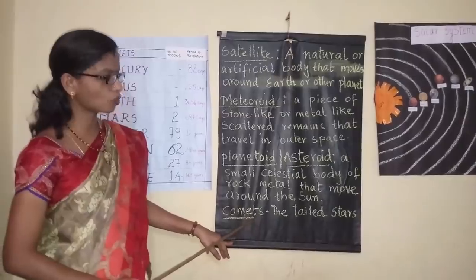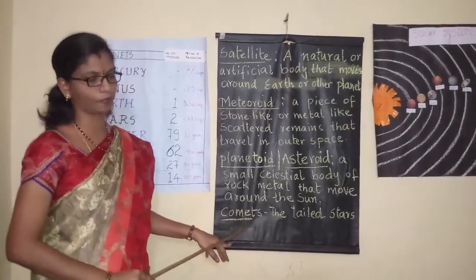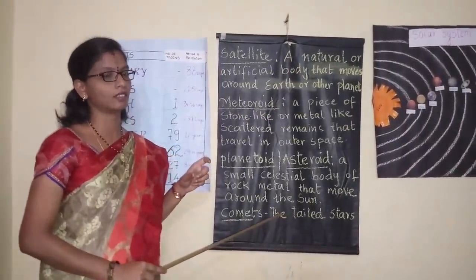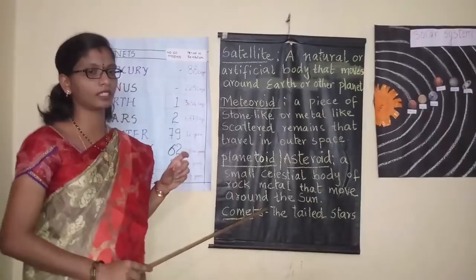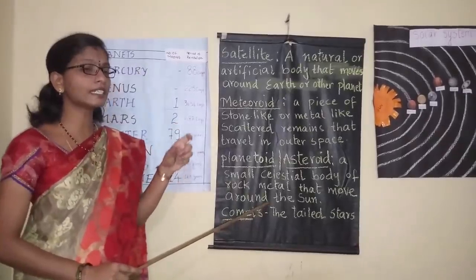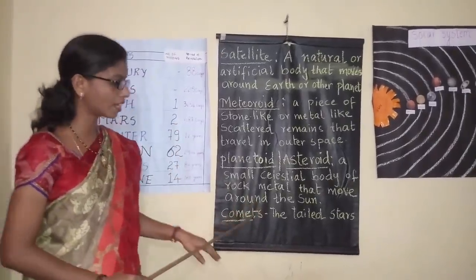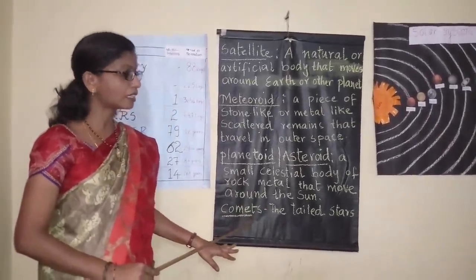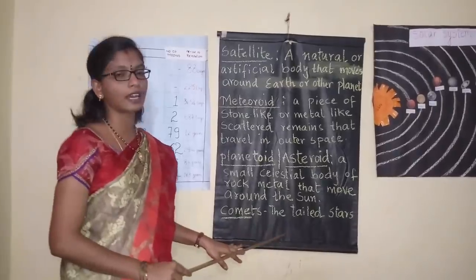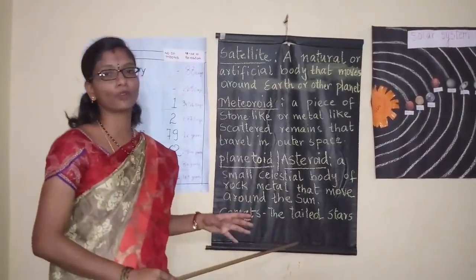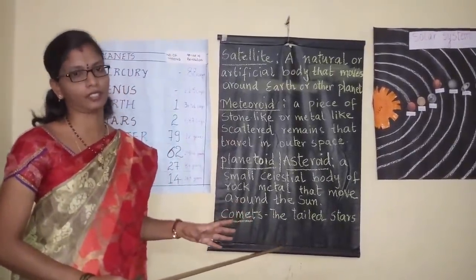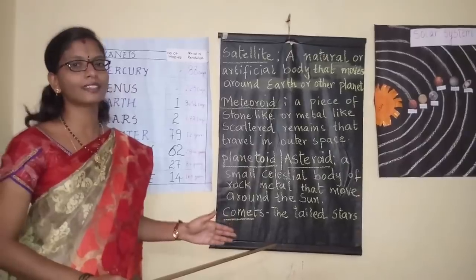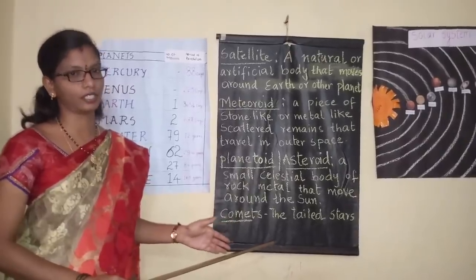Coming to the comets — we see tailed stars in the sky. These tailed stars are known as comets. They are made up of ice and dust.